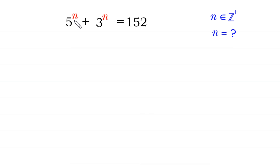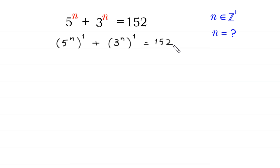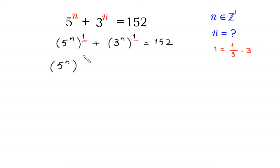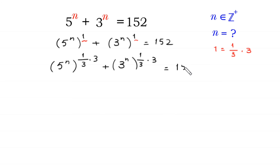We can write 5 to the power n as (5^n)^1 and 3 to the power n as (3^n)^1, which equals 152. We then replace this exponent 1 with 1 over 3 times 3, so we have (5^n)^(1/3 × 3) plus (3^n)^(1/3 × 3) is equal to 152.